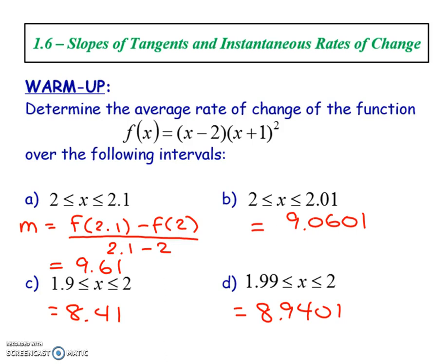1.6 covers slopes of tangents and instantaneous rates of change. An instantaneous rate of change or IROC is composed of many different AROCs, your average rates of change, and that's why I have it as a warm-up. We want to make sure that this skill is very good. We need to know how to calculate an AROC because if we don't we will have no chance of calculating an IROC.